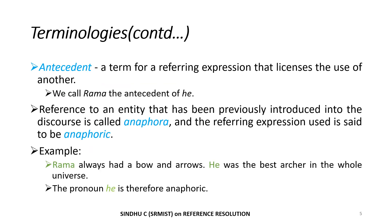Antecedent is a term for a referring expression that licenses the use of another. In our example, we can call Rama the antecedent of he. Then you have anaphora, which is a reference to an entity that has been previously introduced into the discourse context. The referring expression used is called anaphoric. In the example — Rama always had a bow and arrows. He was the best archer in the whole universe — the pronoun he is called anaphoric.